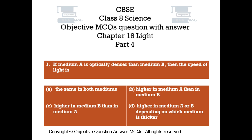Question number 1. If medium A is optically denser than medium B, then the speed of light is: Option A the same in both mediums. Option B higher in medium A than in medium B. Option C higher in medium B than in medium A. Option D higher in medium A or B depending on which medium is thicker.